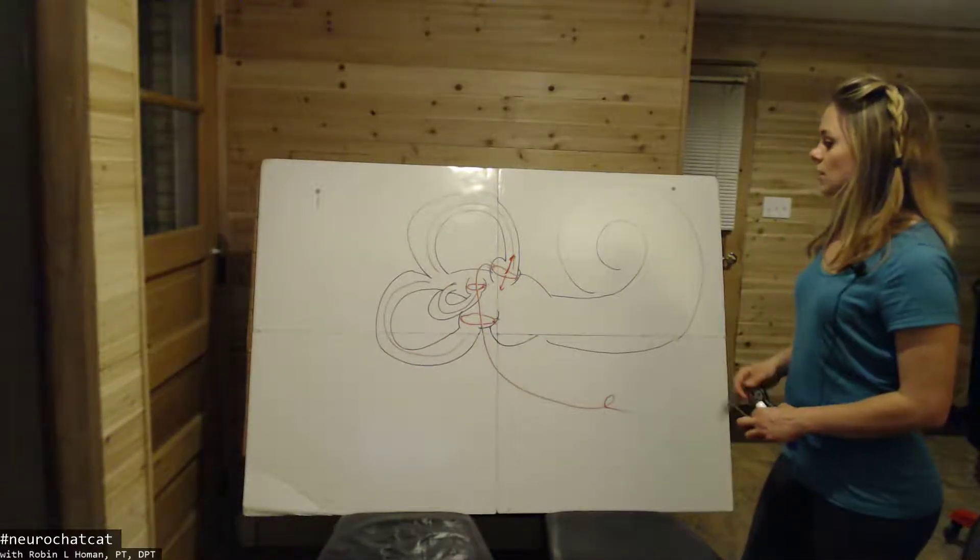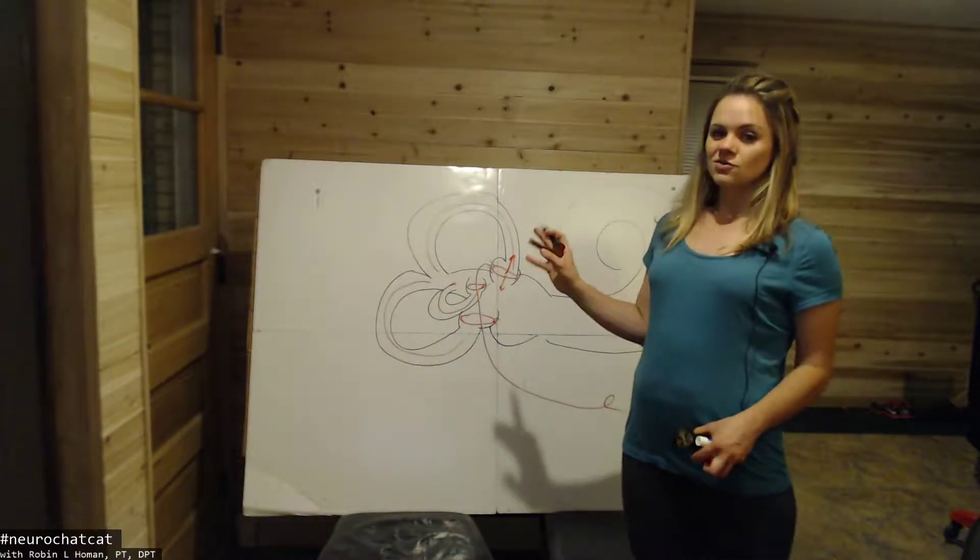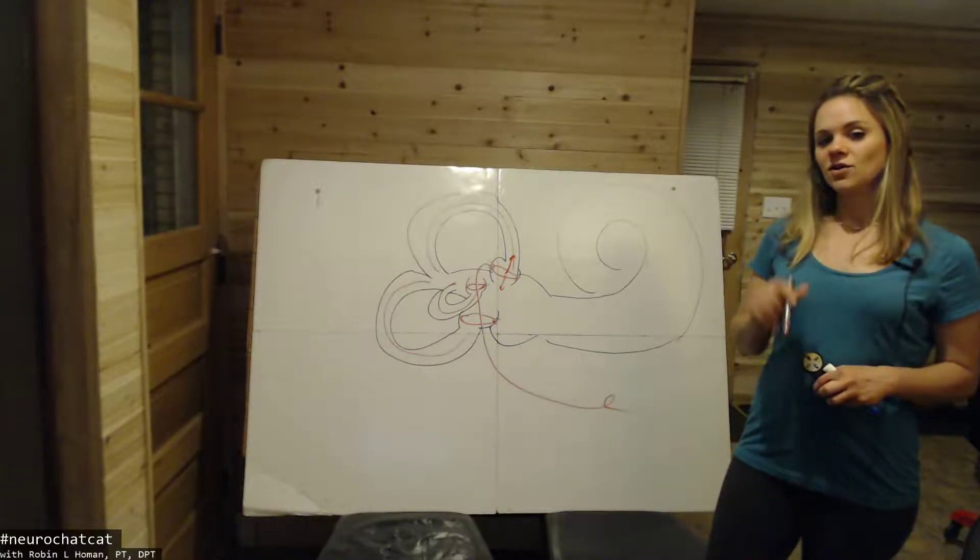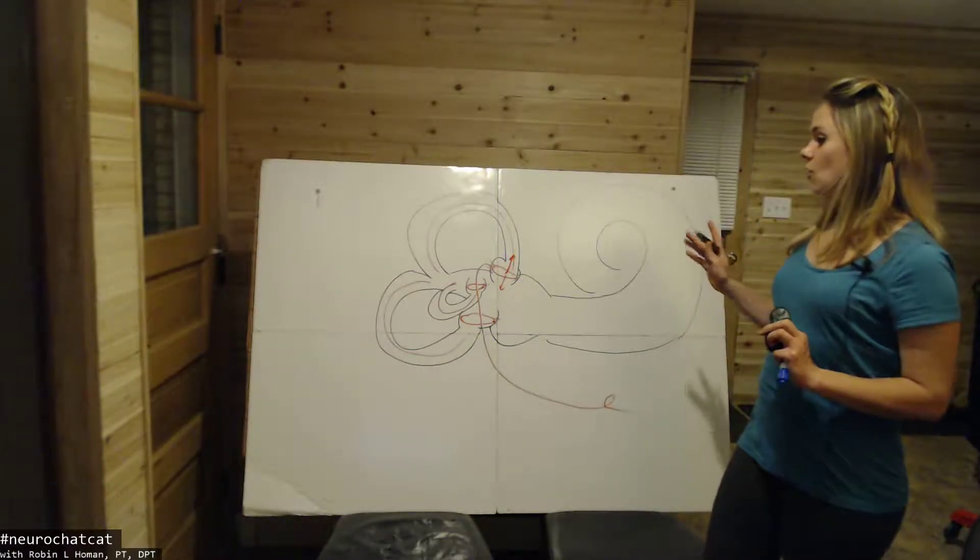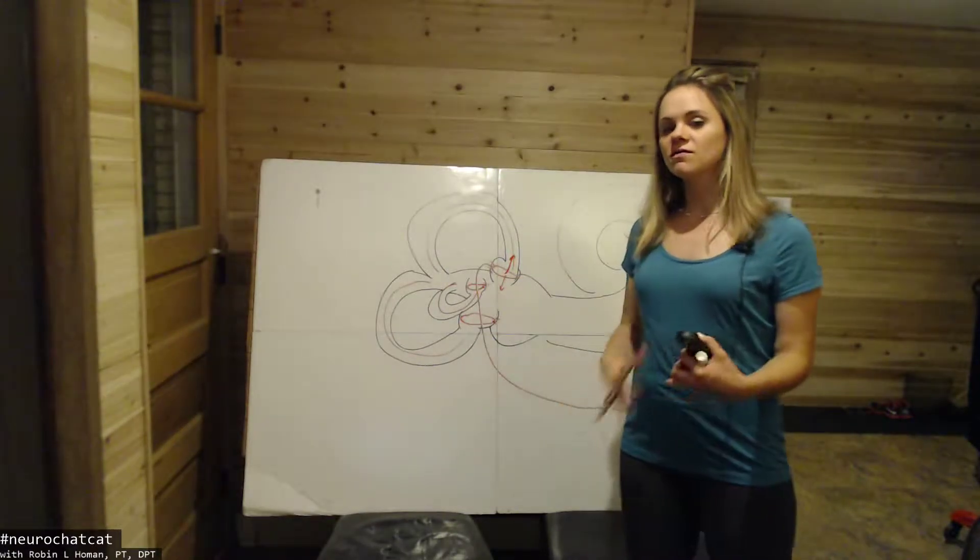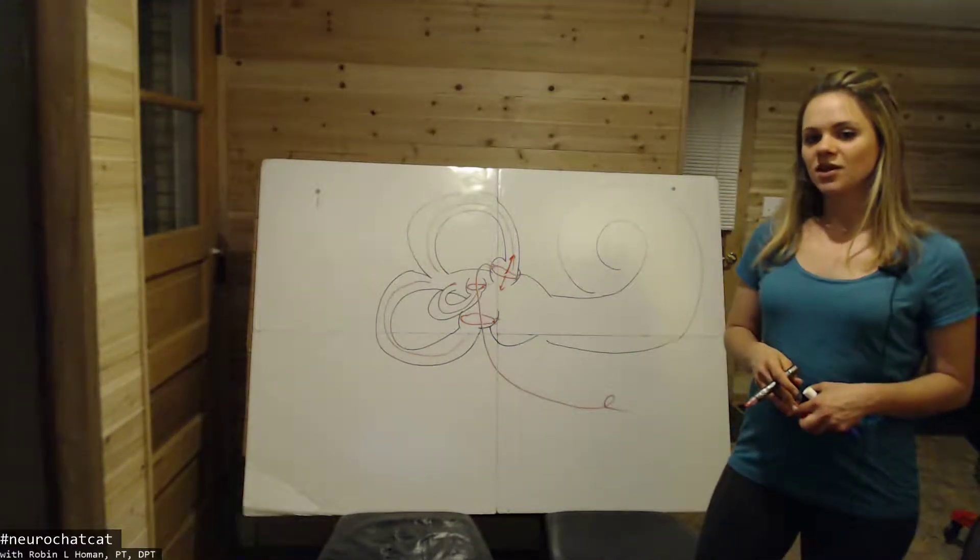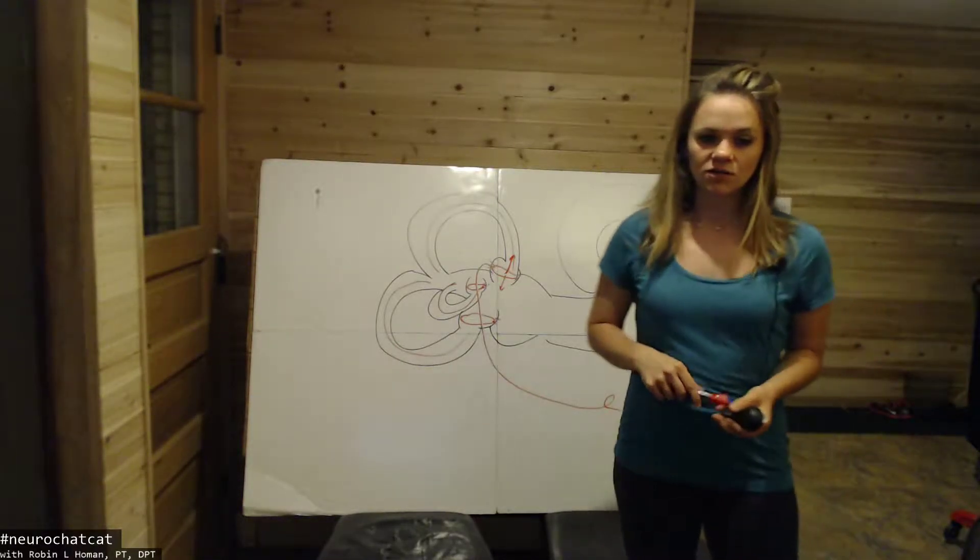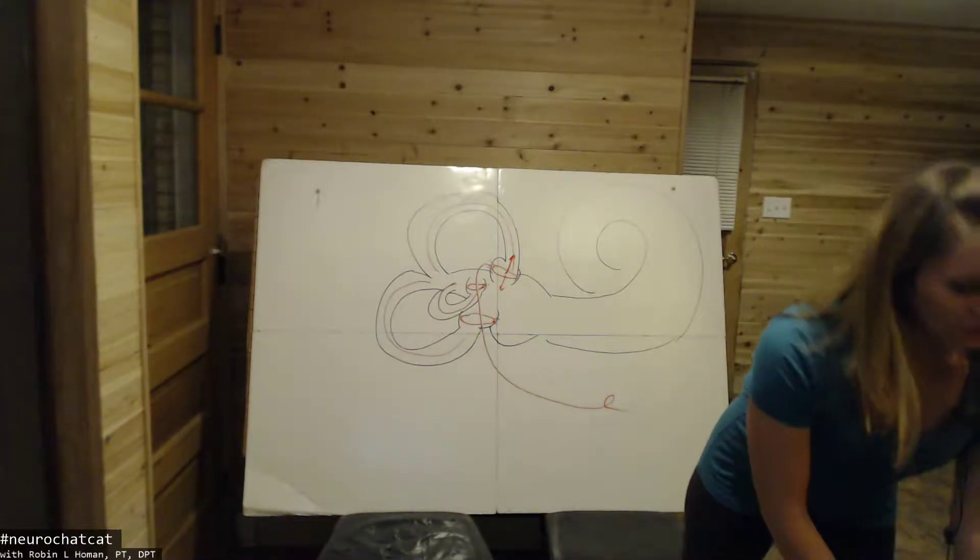And so the semicircular canals are really interesting because they actually sit on the X, Y, and Z axis. And so depending on how you move your head, any combination of movement creates a very 3D image of where you are in space. And what's kind of neat about it too, is that we know that the anterior and posterior canals are 45 degrees off the midline.